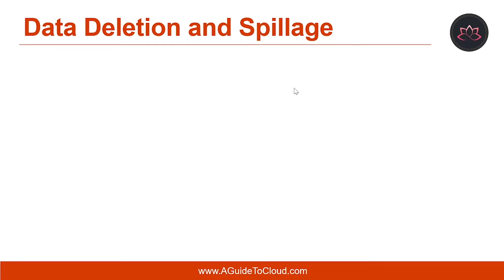Data deletion occurs when an attacker deletes your data, usually in a way that makes recovery difficult if not impossible. A variant of this attack includes ransomware, where an attacker compromises the network, encrypts data, and then demands payment to provide the decryption key. Your core prevention strategy should ensure sufficient redundancies are built into your data management process. Data in Microsoft 365 is automatically backed up and made redundant, but an attacker can still delete data from SharePoint sites and recycle bins, making recovery nearly impossible — so it's critical to back up mission-critical data to offline stores.